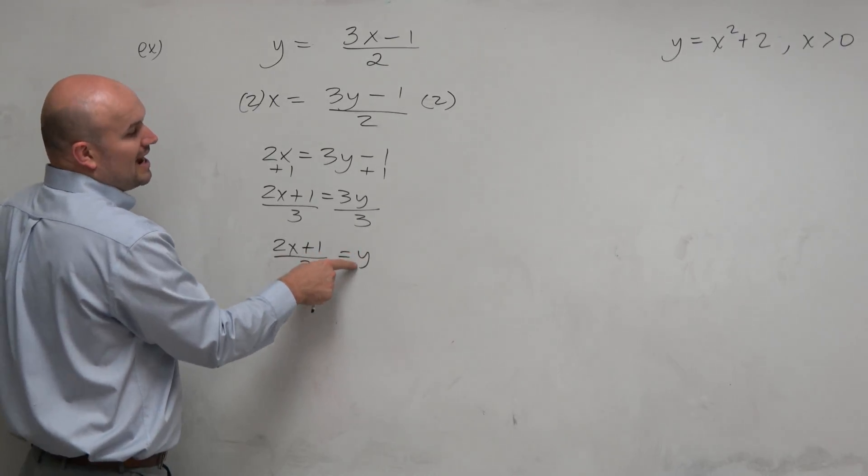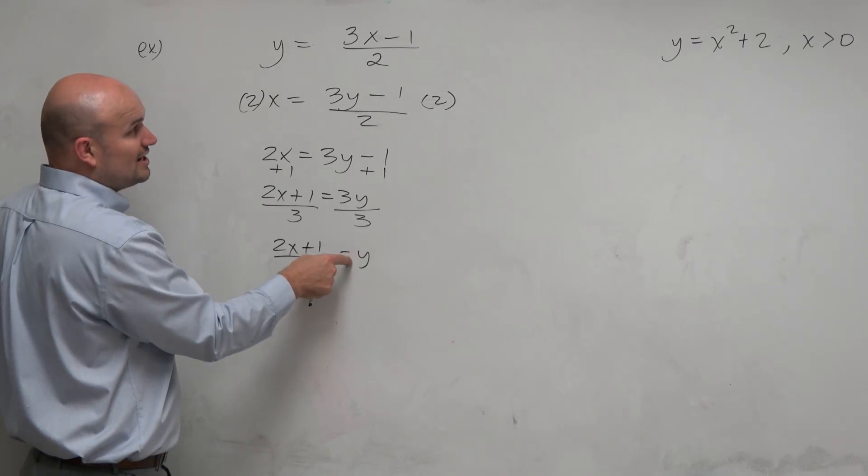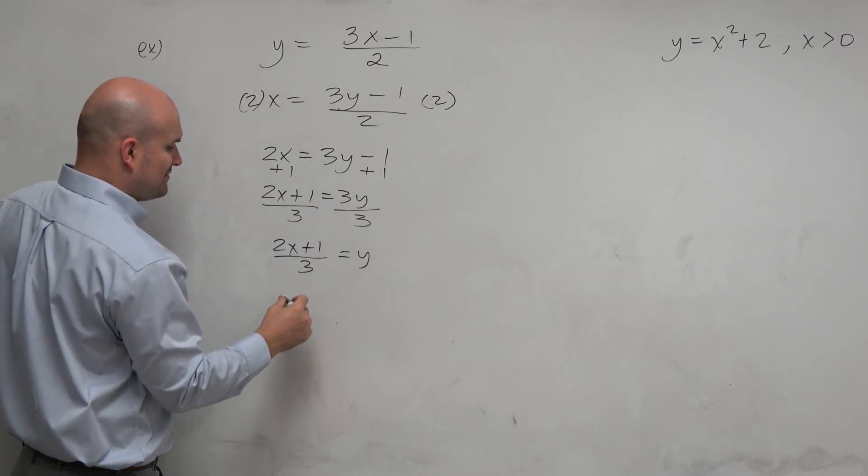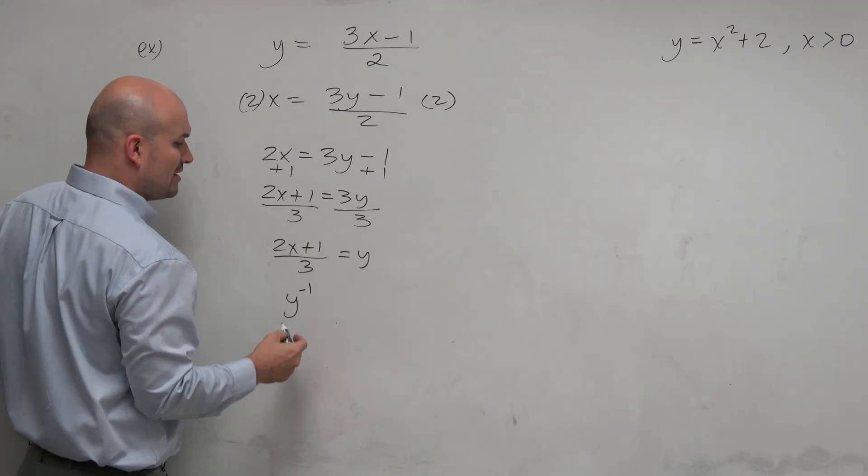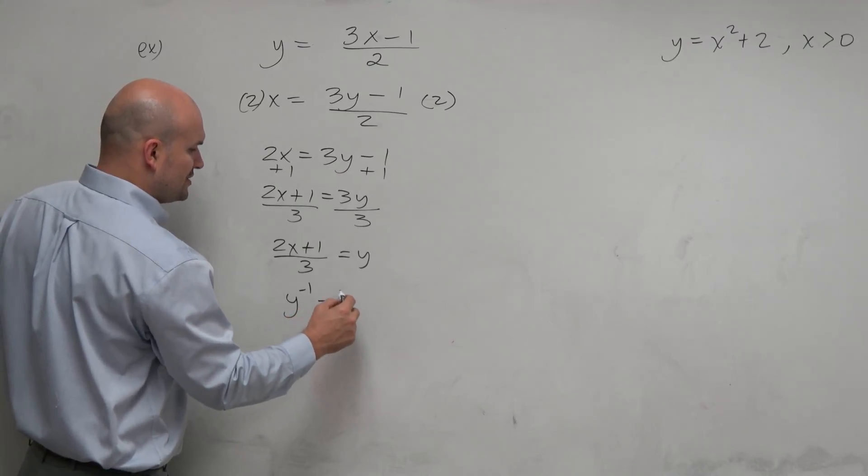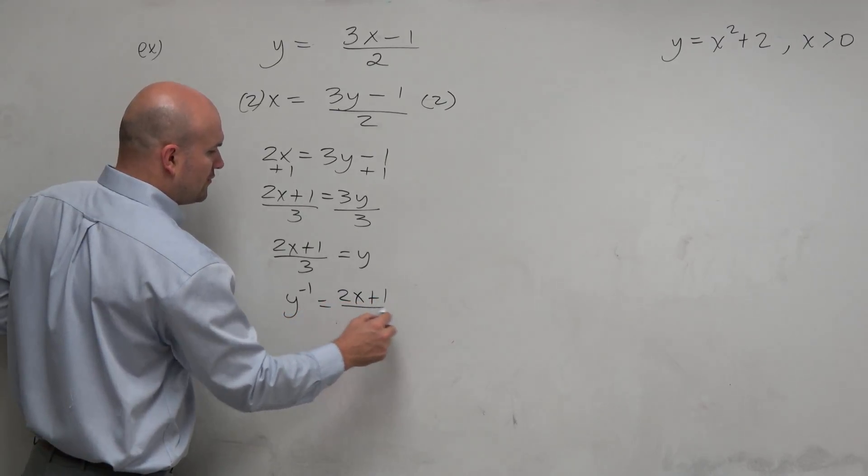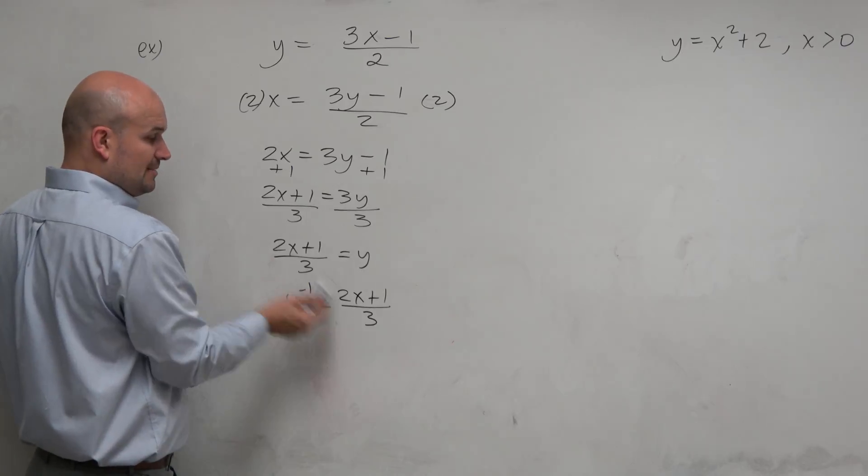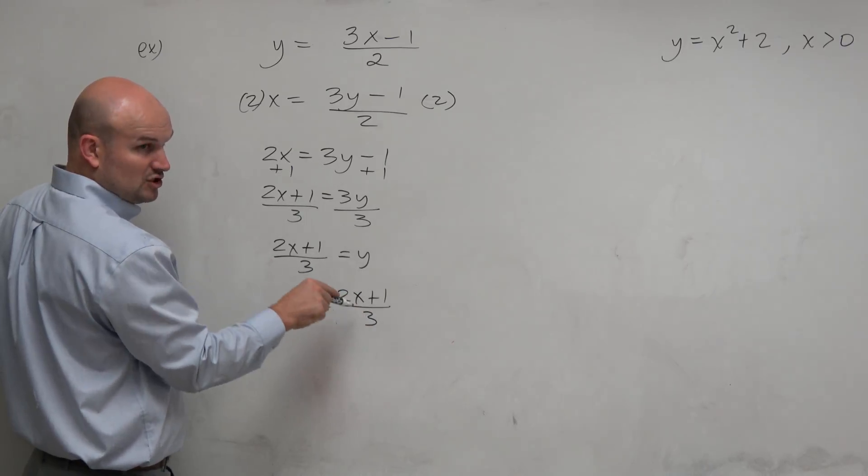Well, actually, that's all for y. Now, we're trying to find y. We're trying to use the inverse notation. So we have to write this in inverse notation. So we write y inverse is equal to 2x plus 1 over 3. It could be written like this. That could be the multiple choice answer.